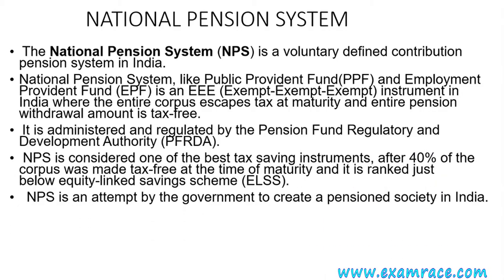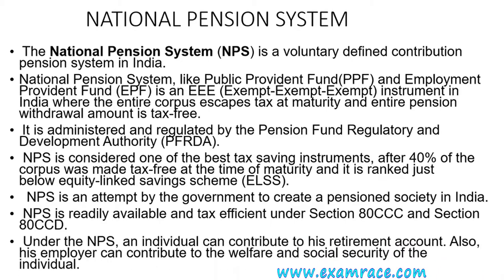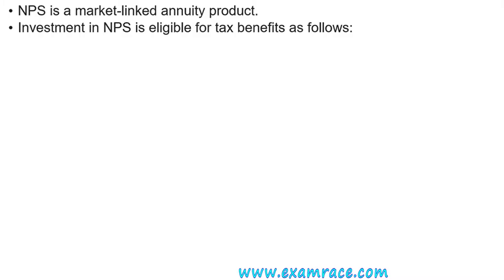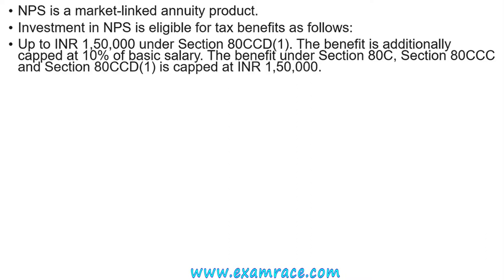NPS is considered one of the best tax-saving instruments; 40% of the corpus was made tax-free at the time of maturity, and it is ranked just below ELSS (Equity Linked Savings Scheme). It is readily available as a tax-efficient option under Section 80 CCCD, where an individual can contribute to his retirement account and his employer can also contribute to the welfare and social security of the individual. It provides a tax benefit of Rs. 1,50,000 under Section 80 CCCD; the additional amount is capped at 10% of basic salary under Sections 80C, 80CCCC, and 80CCCD(1), with the entire amount capped at Rs. 1,50,000.